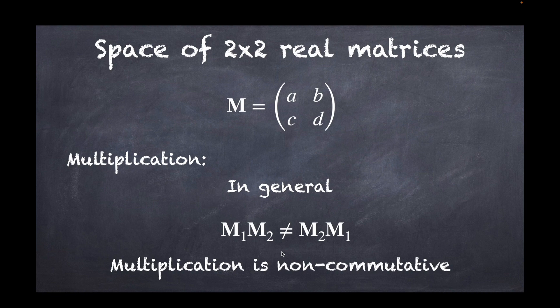This is in contrast with real numbers, where 2 × 3 = 3 × 2. In the space of two-by-two matrices, multiplication is not commutative, so we need to care carefully about the exact order of the matrices.